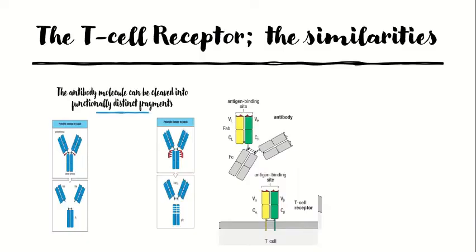Focusing on similarities first: the T cell receptor resembles a membrane-bound Fab fragment. From the last section, the Fab fragment of an antibody is a disulfide-linked heterodimer in which each chain contains one immunoglobulin C domain and one V domain, and the juxtaposition of the V domains forms the antigen binding site. The T cell receptor is also a disulfide-linked heterodimer in which each chain consists of an immunoglobulin C-like domain and a V-like domain, and the juxtaposition of the V domains forms the site of antigen recognition.